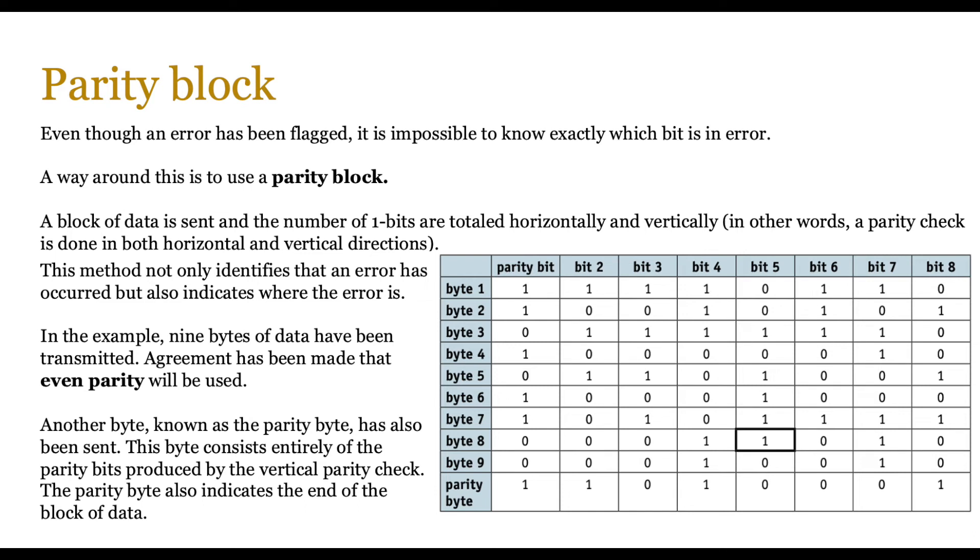This byte is sent at the end, so this is the tenth byte, and it consists entirely of bits produced by a vertical parity check. So the parity bit for each byte will check that particular byte, but if you check each column vertically, then to ensure that that has an even number of ones, you create a parity byte which will consist of all of those bits. So let's check how it works.